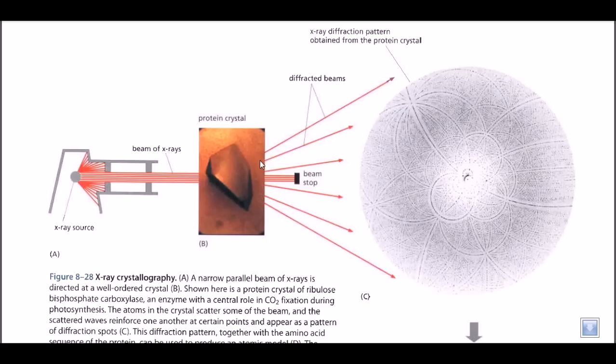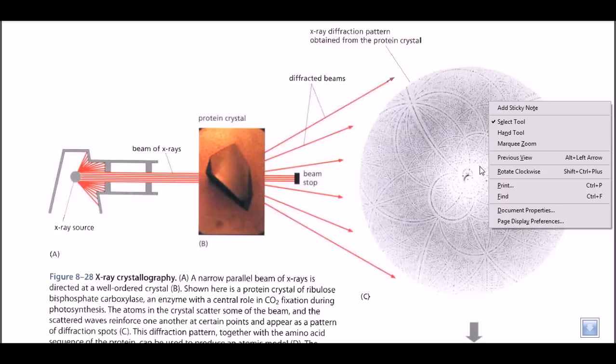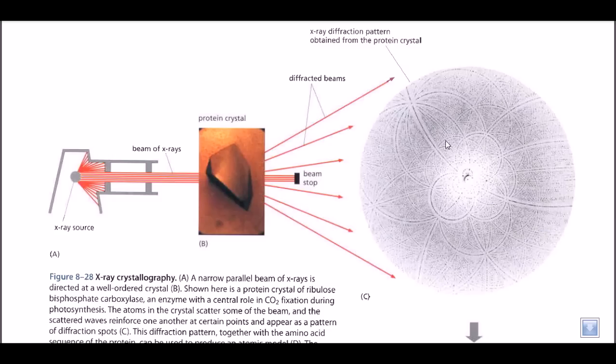When Rosalind Franklin noticed the X-ray crystallogram of DNA, she found that the crystallogram was marked with this X-like structure, and this X-like nature tells us about the helical nature of the DNA. Now we know that DNA is a double helix.